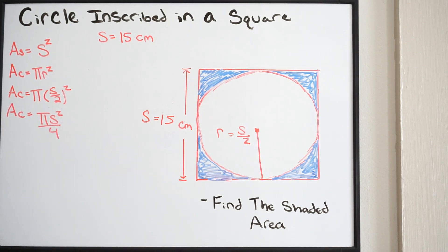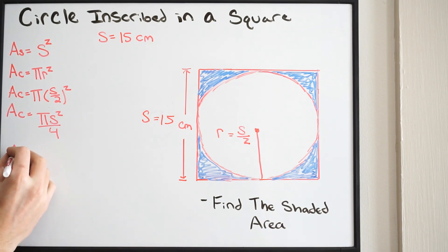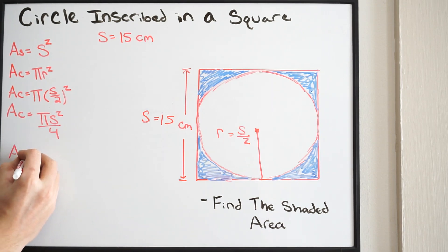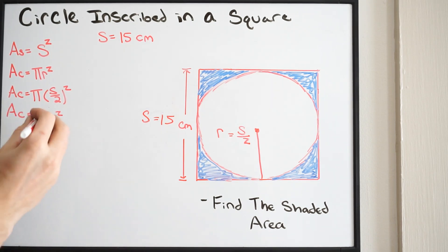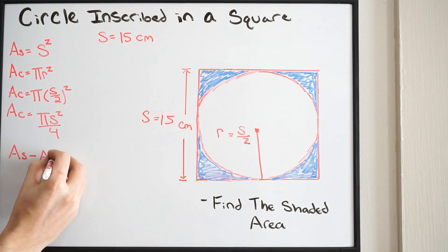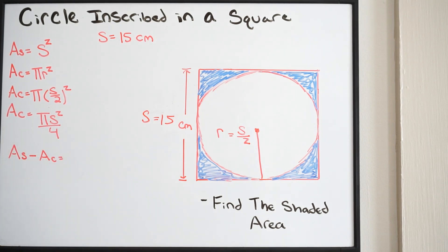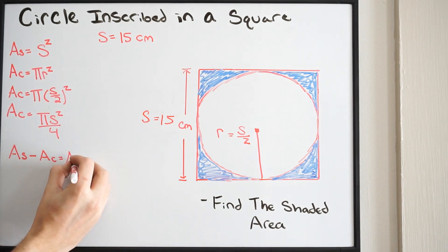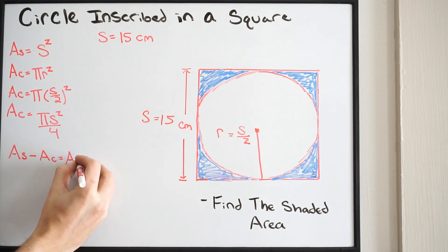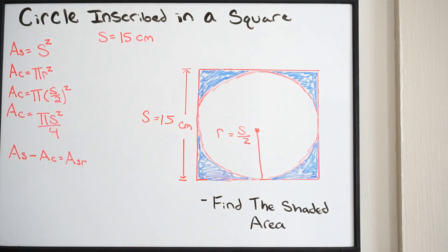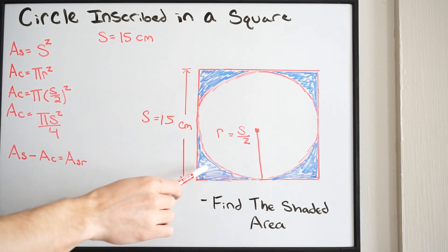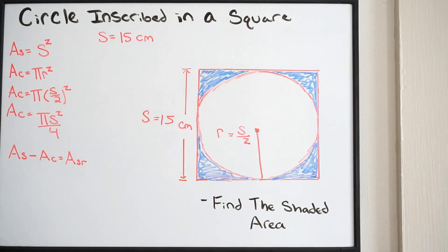What we need to do now to get the area of the shaded region is to simply take the area of our square minus the area of our circle. This is going to give us the area of the shaded region.